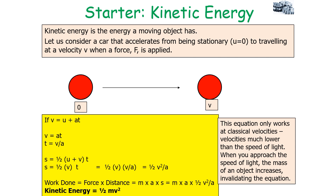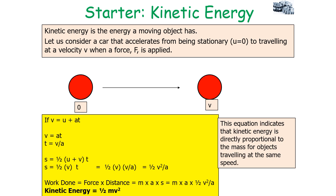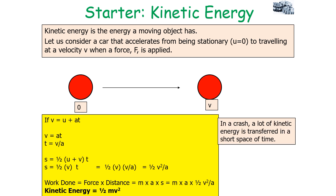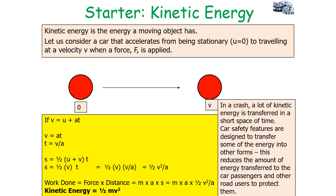This equation only works at classical velocities — much lower than the speed of light — because as an object approaches the speed of light, its mass increases, invalidating the equation. The kinetic energy of an object is directly proportional to its mass for objects at the same speed, and directly proportional to the square of the velocity. In a crash, a lot of kinetic energy is transferred in a short time, and car safety features are designed to transfer some energy into other forms to protect passengers and road users.